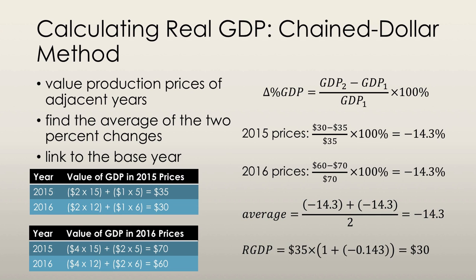The next step is to take the GDP value of the base year and multiply it by the fractional percentage change in GDP. So we take negative 14.3, divide by 100, add 1 to it, and multiply by $35 — and our real GDP for 2016 is $30. The value of GDP in 2015 prices for 2016 is also $30, but in this case it's a coincidence — you're not always going to see this; in fact, you'll rarely see this.